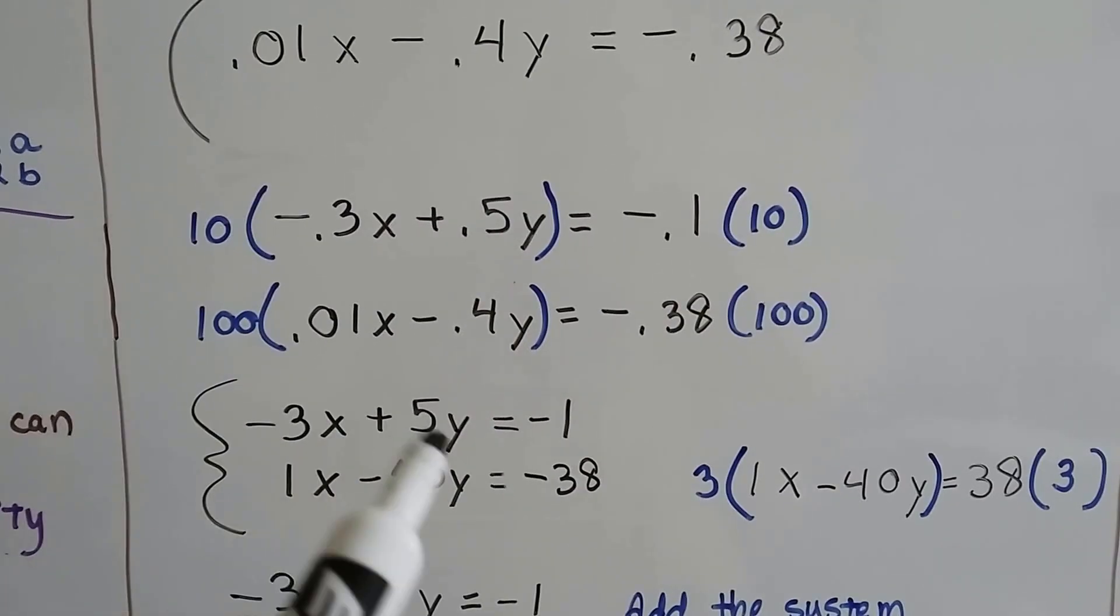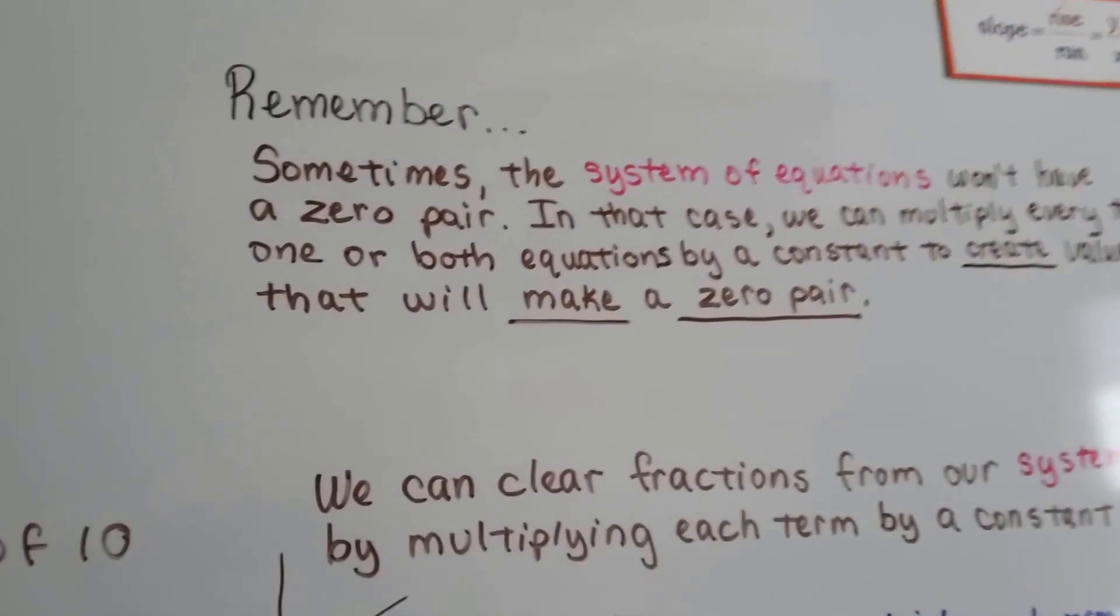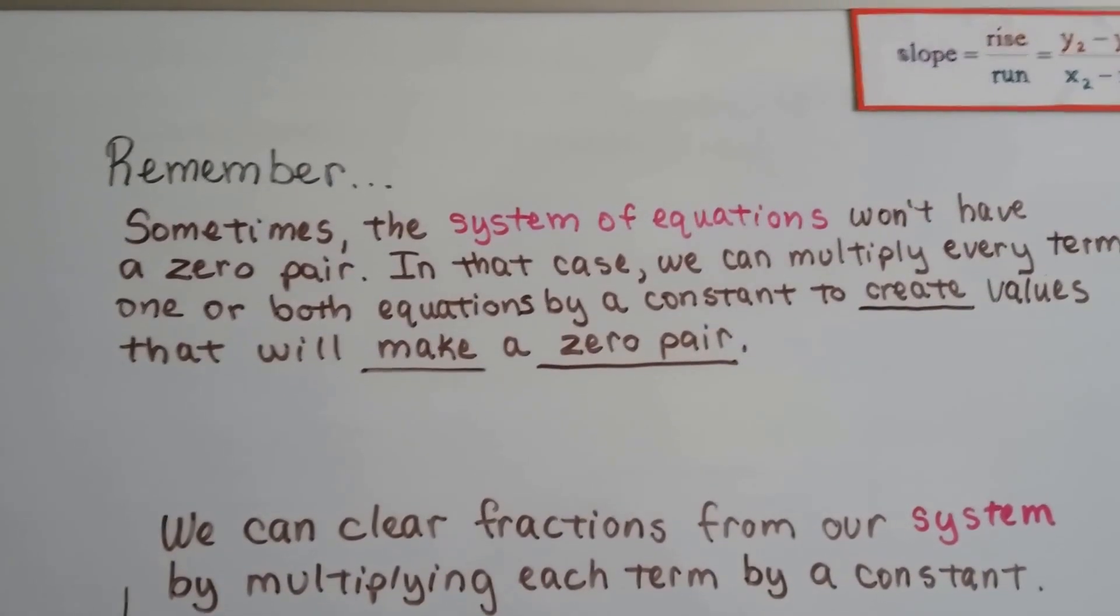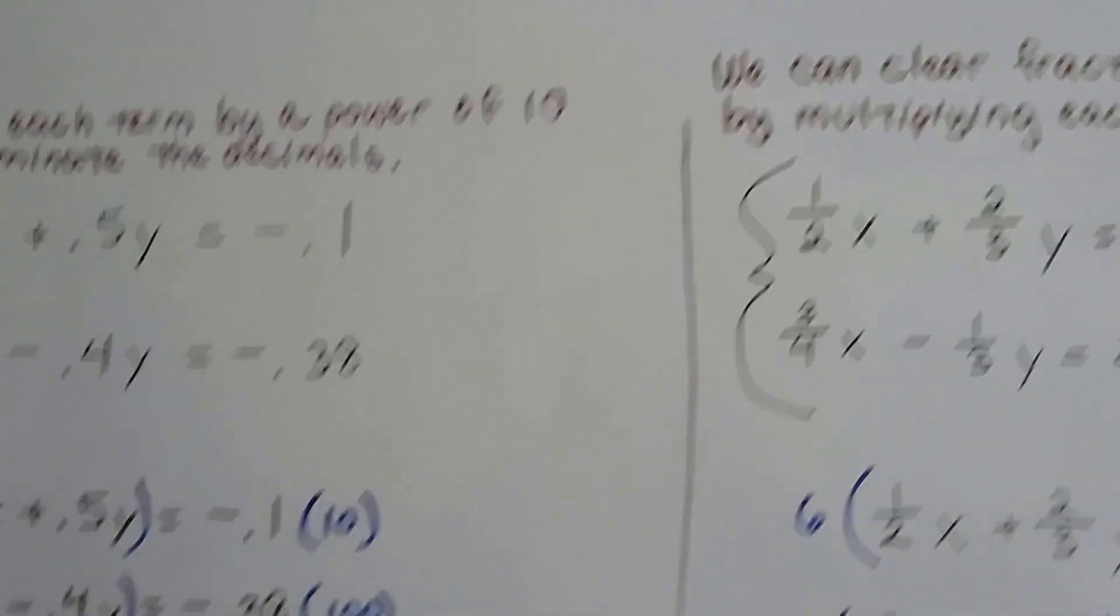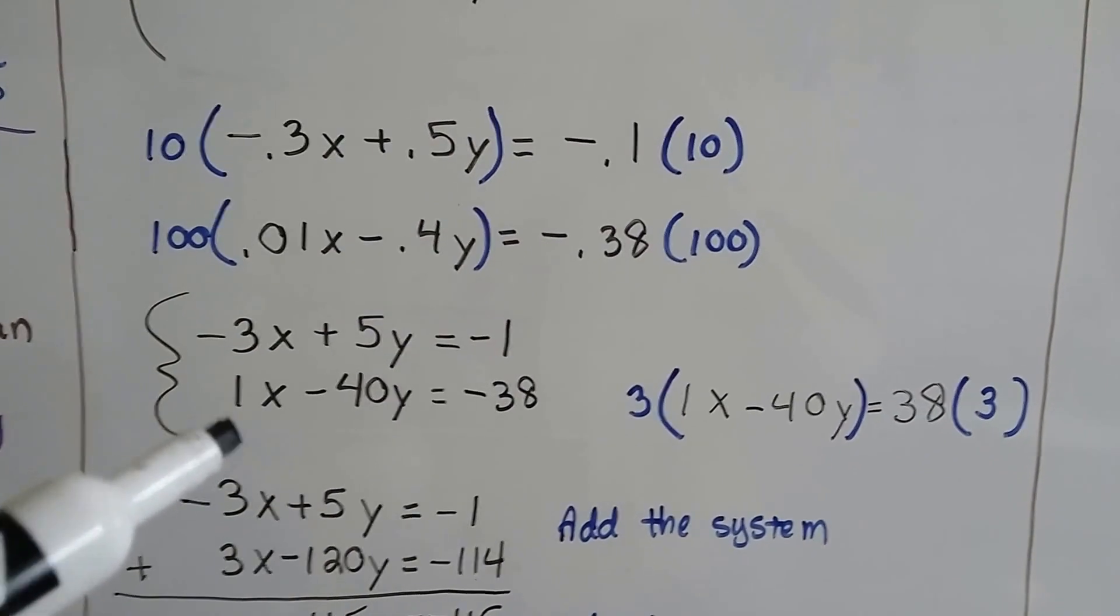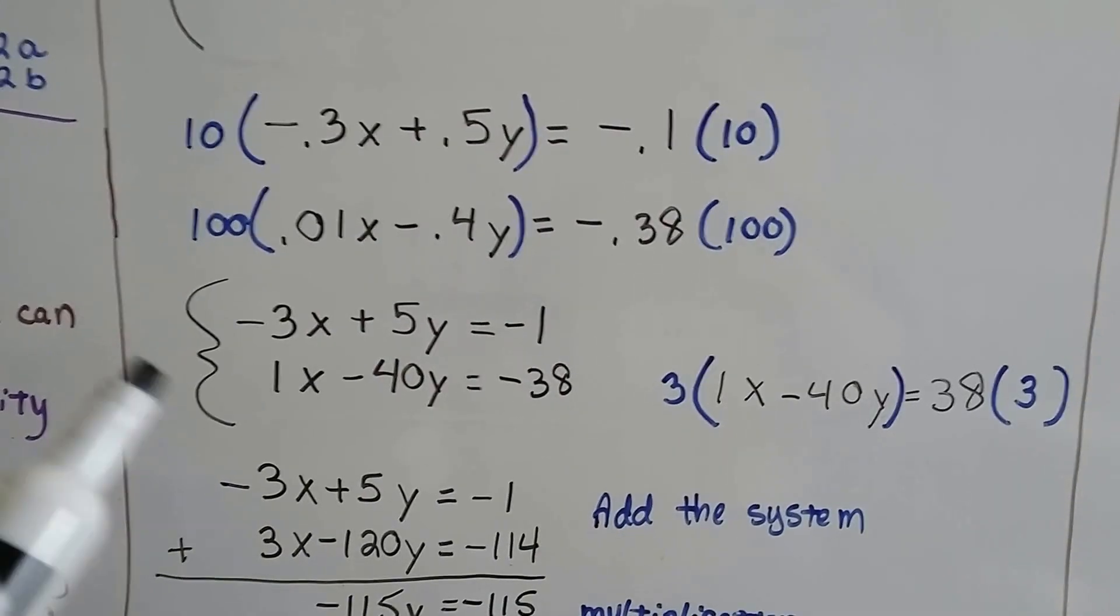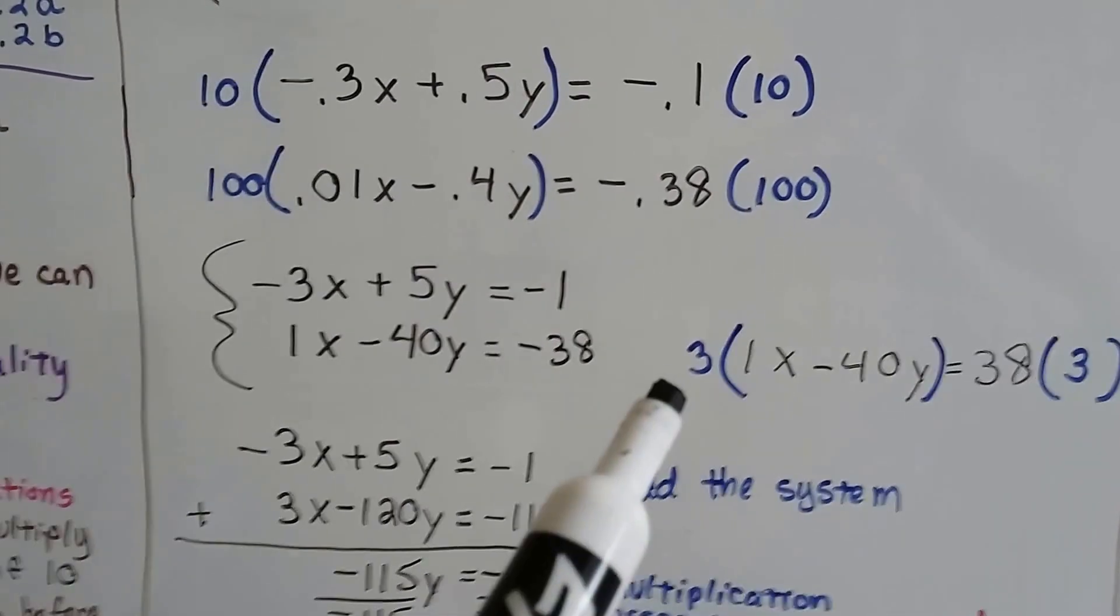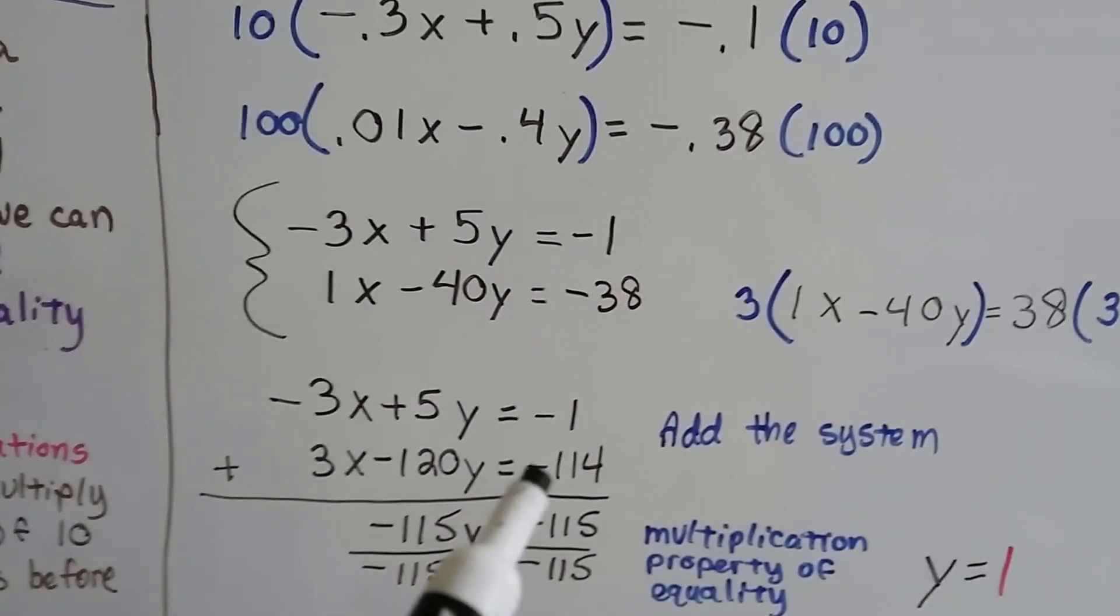I still don't see a zero pair here, and we need to eliminate one of these variables. Sometimes the system of equations won't have a zero pair, and in that case we can multiply every term in one or both equations by a constant to create values that will make a zero pair. For this second equation, because it's got just 1x, we can multiply the whole thing by -3 on each side. Then we'll have a zero pair with this -3x. This makes 3x - 120y = -114.